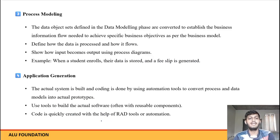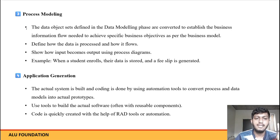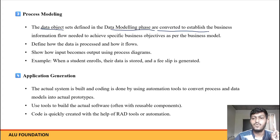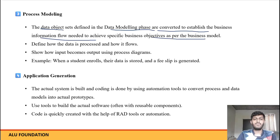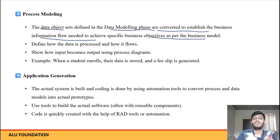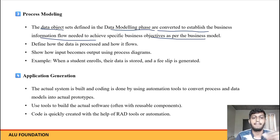Process modeling — jo bhi humay data objects create kiye hain, unko hum process karenge. The data objects defined in the data modeling phase are converted to establish the business information flow needed to achieve a specific business objective as per the business model. Toh data objects ko kya karte hain hum — jo data modeling se provide kiya hai, usko convert karte hain, establish karte hain business information mein, jo humay lagey ki usse humara business achha hoga, uspar woh kaam kar lenge.